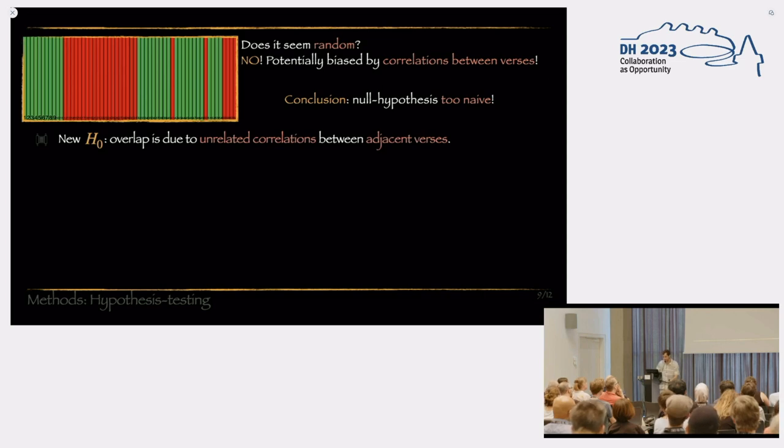And the remedy for that is that we assume a different null hypothesis. That instead of the labeling being random, we rather assume that the labeling is caused due to some unrelated correlations between verses that don't bear the stylistic signal, just are caused by some semantic similarities. And the test and the remedy to this is perform not a permutation test, but a cyclic shift test, where we just conserve the structure of the hypothesized labeling and shift it cyclically.